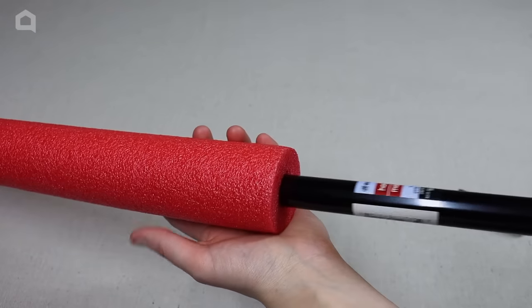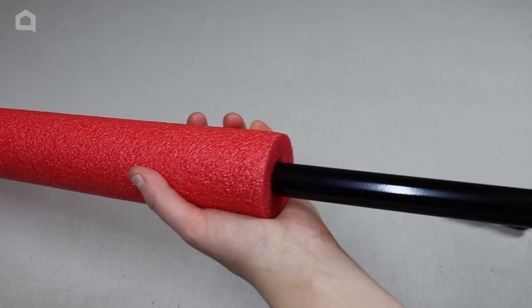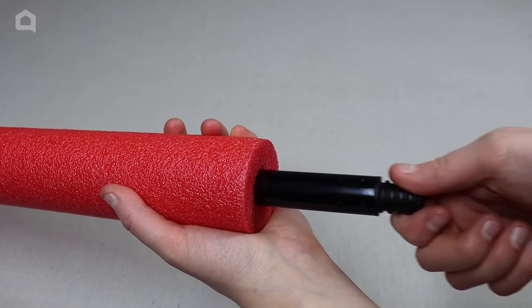Take the pole and put it into the pool noodle. Leave the screw end pushed out slightly.